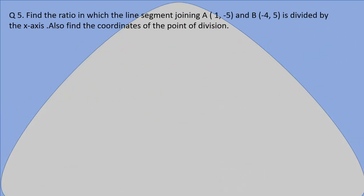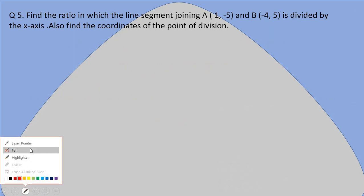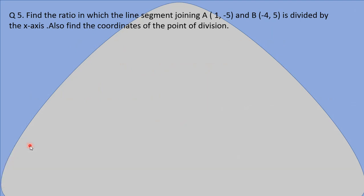Question number 5 says: find the ratio in which the line segment joining A(1, -5) and B(-4, 5) is divided by the x-axis, and also find the coordinates of the point of division.